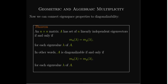Having n linearly independent eigenvectors is equivalent to being diagonalizable, because then the eigenvector matrix is invertible and we can go from AV equals VD to V inverse AV equals D.